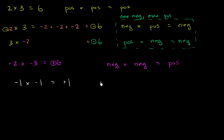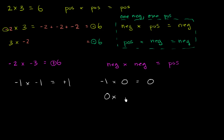What happens if I did negative 1 times 0? This doesn't really fit into any of those circumstances, because 0 is neither positive nor negative. Here you just have to remember: anything times 0 is going to be 0. So negative 1 times 0 is going to be 0. Or I could have said 0 times negative 783 — that is also going to be 0.